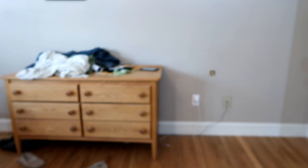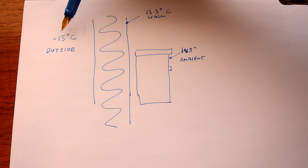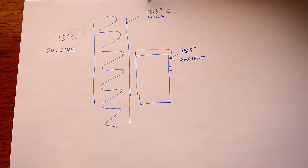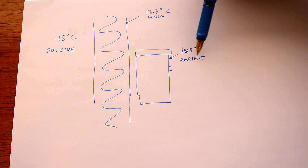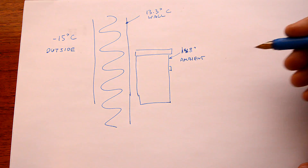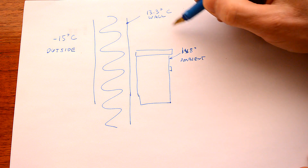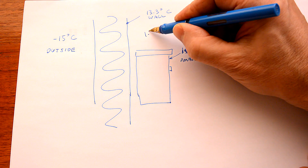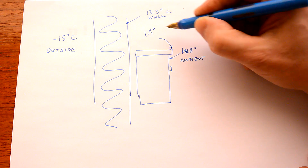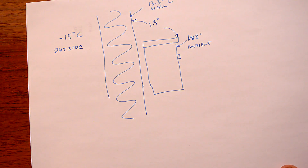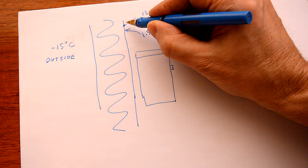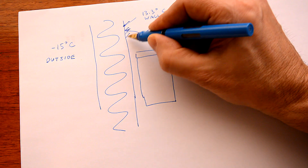The outside temperature is minus 15. So we have minus 15 outside, 13.3 at the surface of the wall, and the dresser is at 14.8 which is the ambient temperature of the room. So the wall is 1.5 degrees between the ambient and the wall surface. And at the actual surface of the wall, there's a boundary layer here.